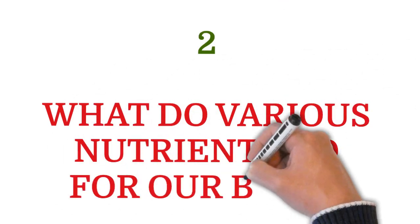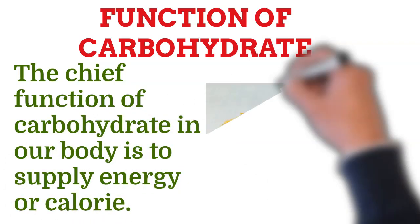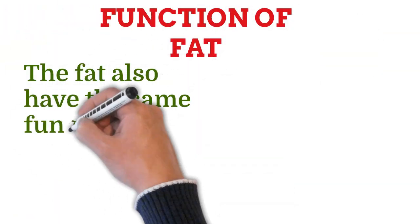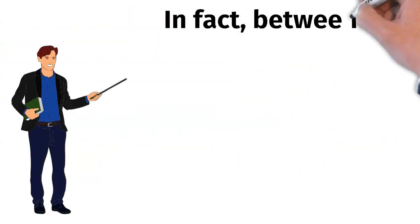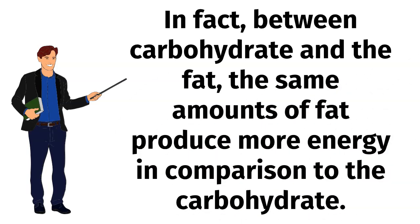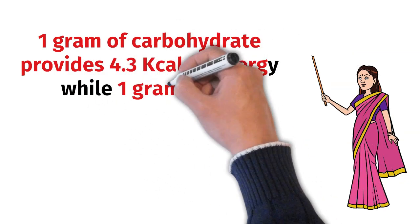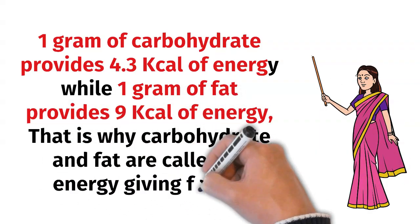Next, let's look at what various nutrients do for our body and the function of different nutrients. The chief function of carbohydrates is to supply energy or calories. Fats also supply energy to our body. In fact, the same amount of fat produces more energy compared to carbohydrates. One gram of carbohydrate provides 4.3 kilocalories of energy, while one gram of fat provides 9 kilocalories of energy. That is why carbohydrates and fats are called energy-giving foods.